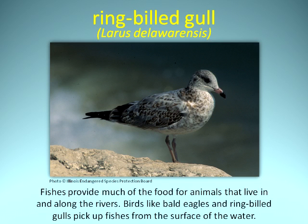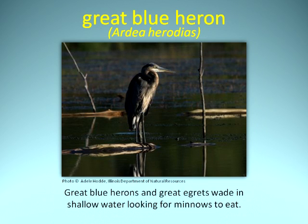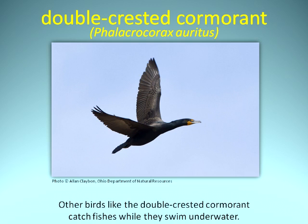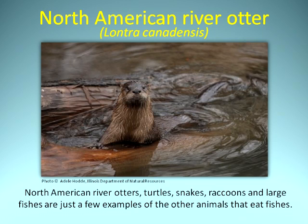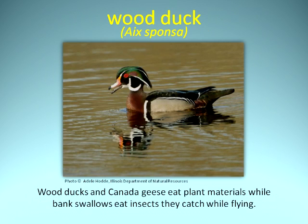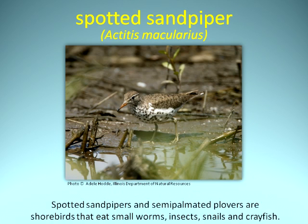Birds like bald eagles and ring-billed gulls pick up fishes from the surface of the water. Great blue herons and great egrets wade in shallow water looking for minnows to eat. American crows eat dead fishes that wash up on the banks. Other birds, like the double-crested cormorant, catch fishes while they swim underwater. North American river otters, turtles, snakes, raccoons, and large fishes are just a few examples of the other animals that eat fishes. Fishes and many of their predators also eat crustaceans, aquatic insects, and mollusks, like snails and mussels, from the rivers. Wood ducks and Canada geese eat plant materials while bank swallows eat insects they catch while flying. Spotted sandpipers and semipalmated plovers are shorebirds that eat small worms, insects, snails, and crayfish.